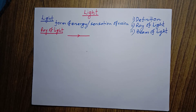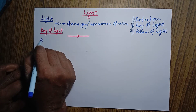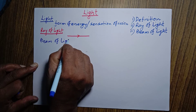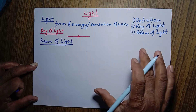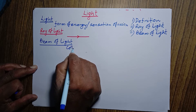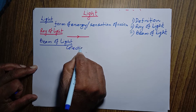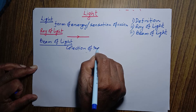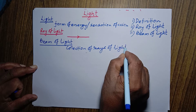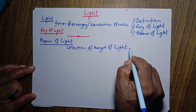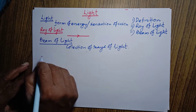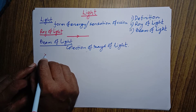Now let's talk about beam of light. The collection of rays of light is called a beam of light. This beam of light may be of different types — normally it is of three types: number one, parallel beam of light.